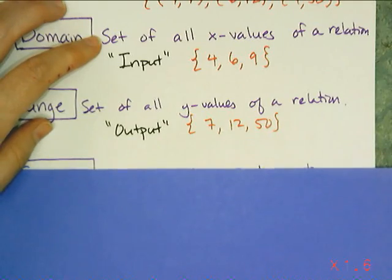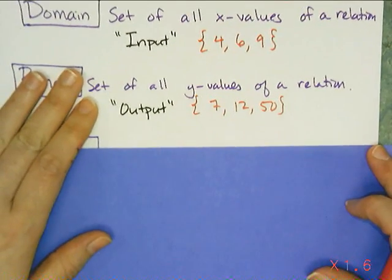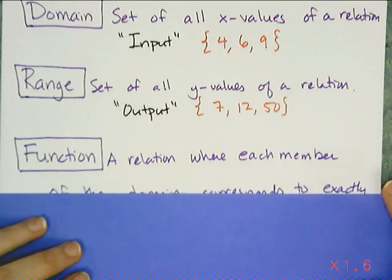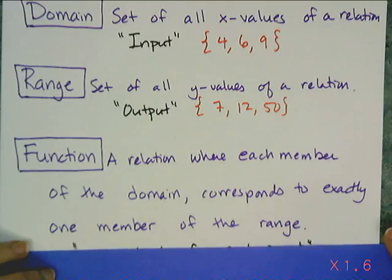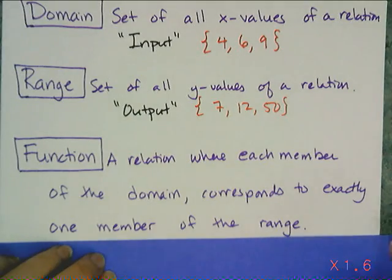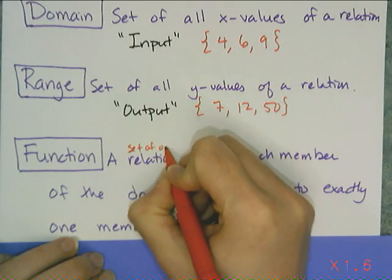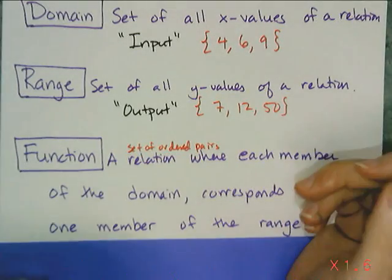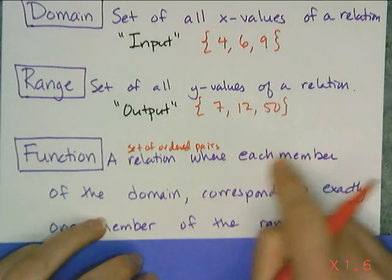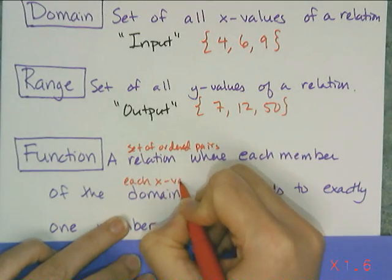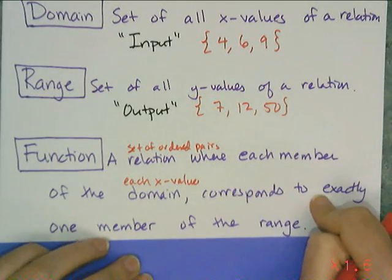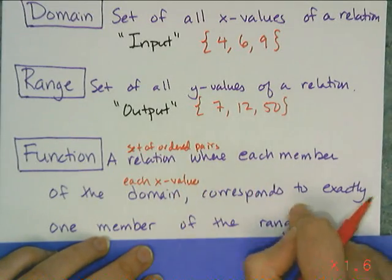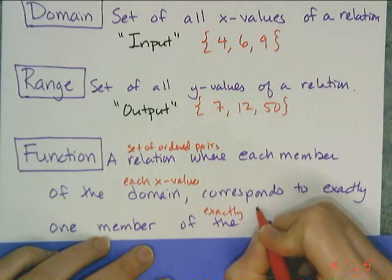Here's what a function is — I'll interpret it in friendly language after I read it. A function is a relation — so it's a set of ordered pairs — where each member of the domain corresponds to exactly one member of the range. It could be a finite set like the one I showed, or like a graph of a line. Each member of the domain means each x value, and corresponds to exactly one member of the range means each x value matches to exactly one y value.